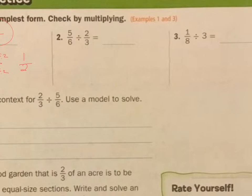Number 2: 5 sixths, keep that, change, change. 3 times 5 is 15, 6 times 2 is 12.